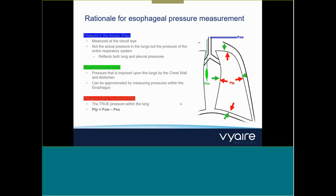There are three zones of interest. The blue highlights the pressure in the airways — Paw — measured at the circuit Y at the ET tube. It reflects both the lung and pleural pressures. The green area is pleural pressure, for which we use esophageal pressure as a surrogate — the pressure imposed upon the lungs by the chest wall and abdomen. The red is the true pressure within the lung: airway pressure minus esophageal pressure gives you your transpulmonary pressure.